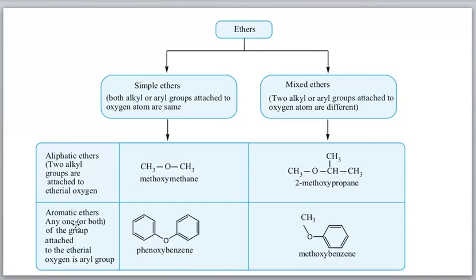If any one or both of the groups attached to the ethereal oxygen is an aryl group, it is called an aromatic ether. Phenoxybenzene has two aryl groups; anisole has one alkyl and one aryl group - both are aromatic ethers. Diphenyl ether is also an aromatic ether.